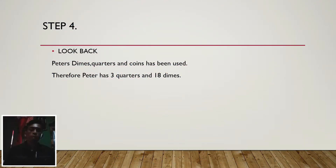We will apply this method to answer the given problem. Let's read the problem first: Peter has six times as many dimes as quarters in her piggy bank. She has 21 coins in her piggy bank. The total in all is $2.55. What is being asked: how many of each type of coin does she have?